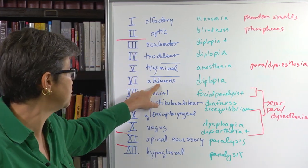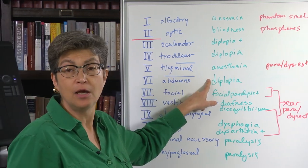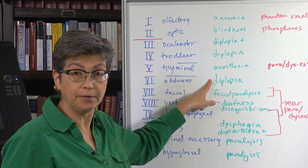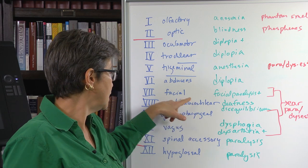We go to abducens. We're back in extraocular land. So once again, the effect is a diplopia, a double vision.